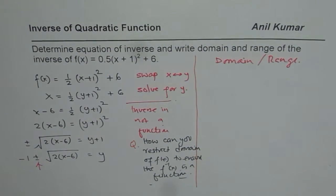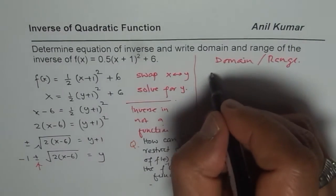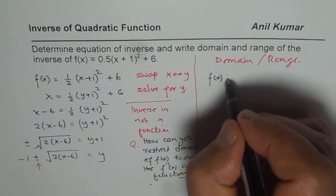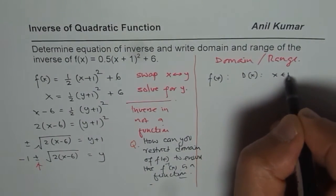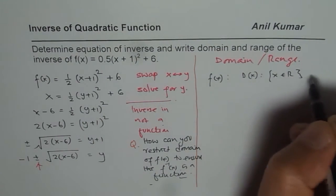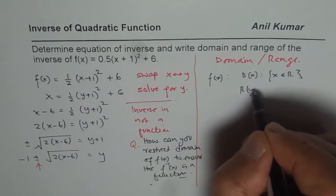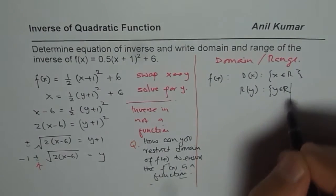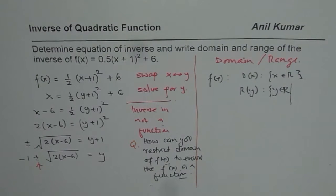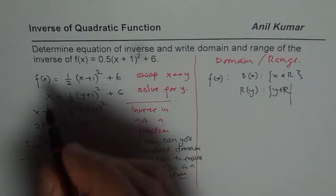So let me first write domain and range of the function itself. For function f(x) is a quadratic function. So domain is x belongs to real numbers and the range for the quadratic function is y belongs to real numbers. But it has an absolute minimum since it opens upwards.